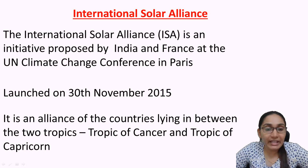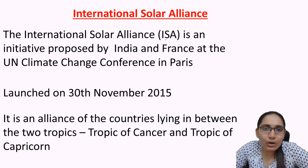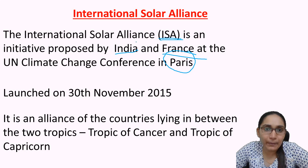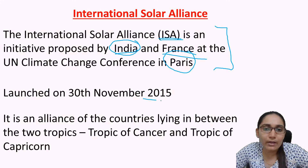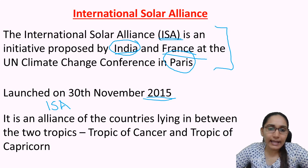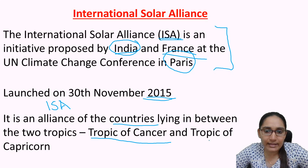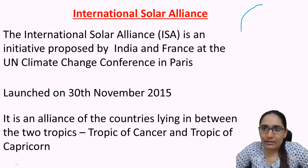Very important is the International Solar Alliance or ISA, which is explicitly mentioned in the syllabus. ISA is an initiative proposed by India and France at the UN Climate Change Conference in Paris in 2015. India is a founding member and it was launched on 30th November 2015. ISA is an alliance of countries lying between the two tropics — the Tropic of Cancer and the Tropic of Capricorn.